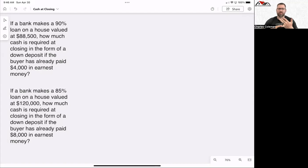We're talking about a purchase price of $88,500. The bank is going to loan 90%, and the buyer already dropped off $4,000 in earnest money for consideration to take the property off the market. So we're looking at a purchase price of $88,500.